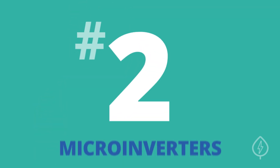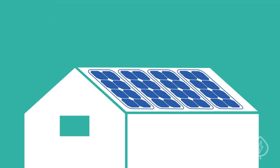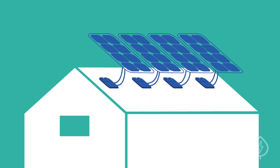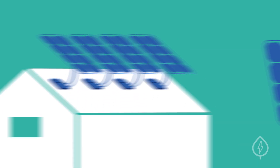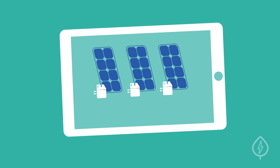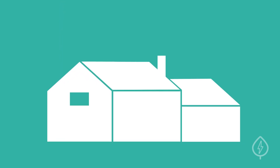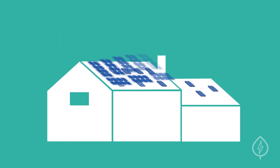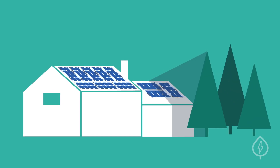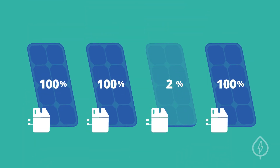Microinverters are small inverters located at each individual panel. Because each panel has its own inverter, you can monitor the performance of each panel separately. They are also better for more complicated installations and those with shading. With microinverters, even if one panel isn't producing electricity, the others will continue performing efficiently.